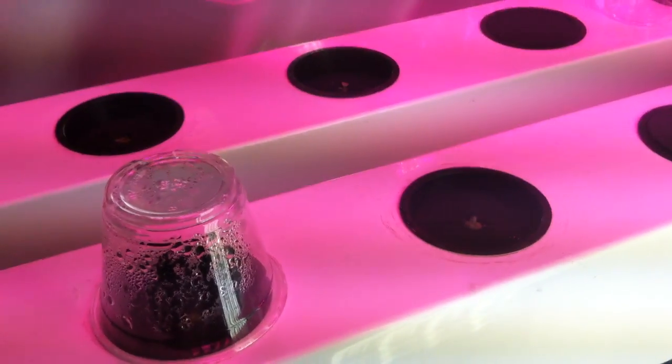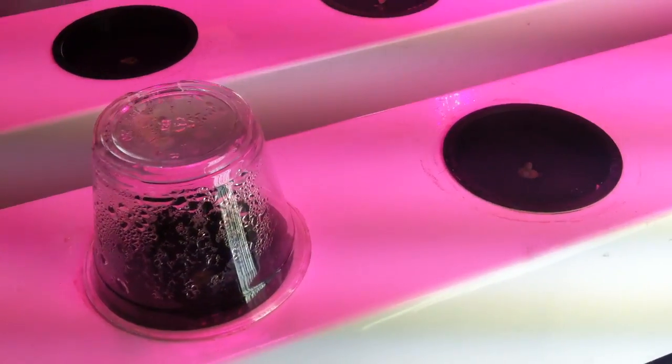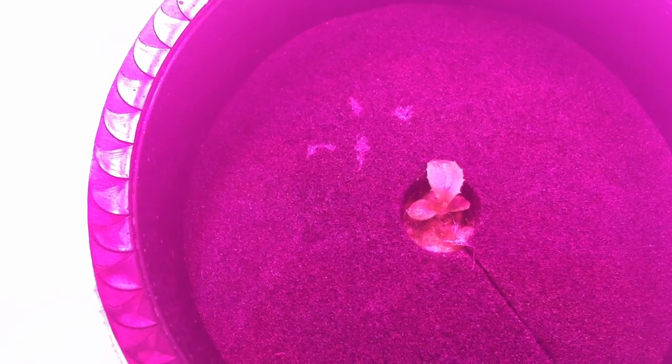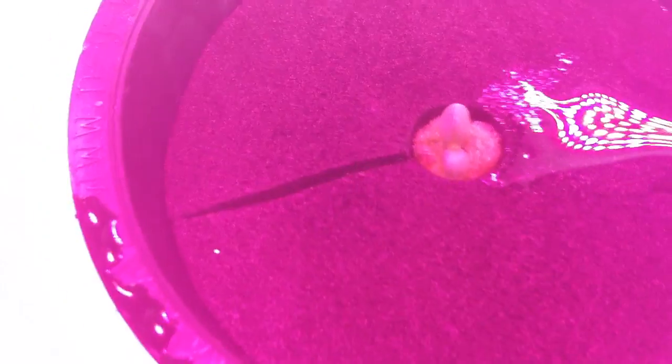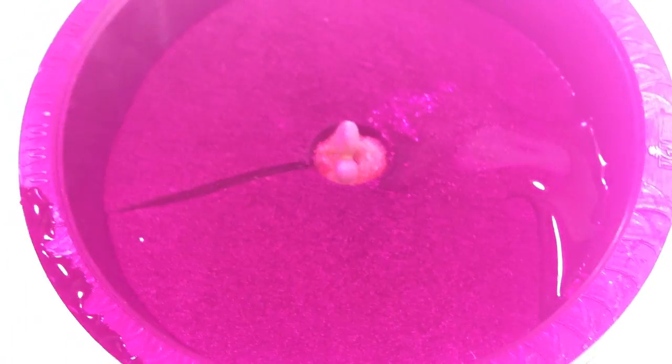So that's one thing to learn from this is putting that dibble hole down the center definitely improved germination. And I think it's improving growth because if you look at this one, it's what, a week old? That's teeny for a lettuce plant, a week old. And this one is like two days from seed and that's almost caught up to it.